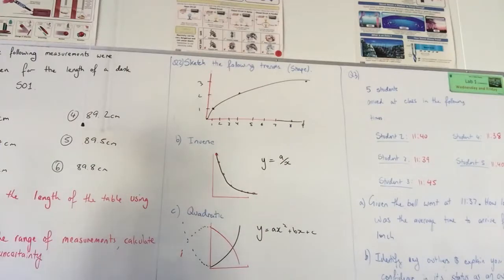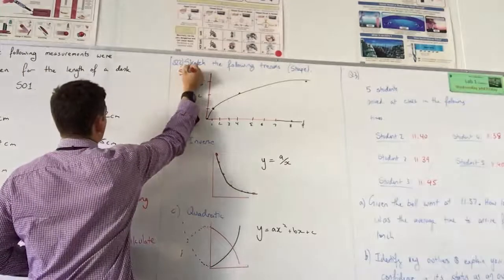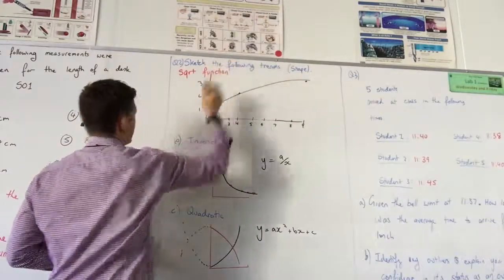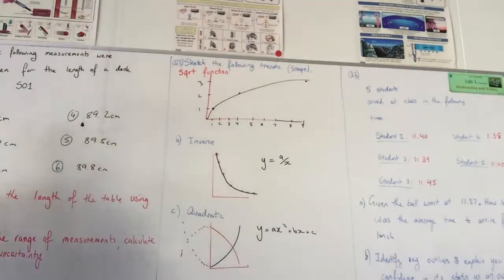So as x gets bigger, y also gets bigger, but at a far slower rate. So that there is a square root function. And again, I won't be asking you to do anything mathematically with it, just to describe the trend, potentially.